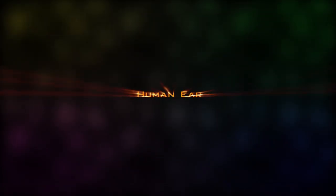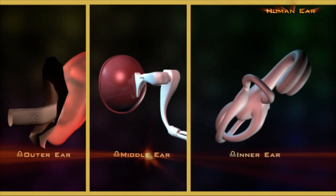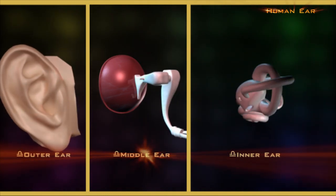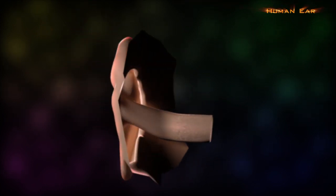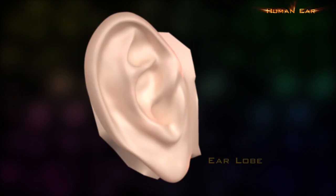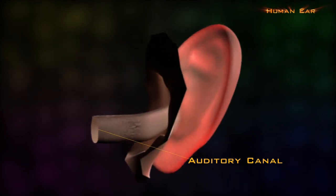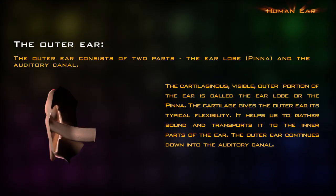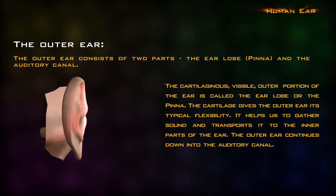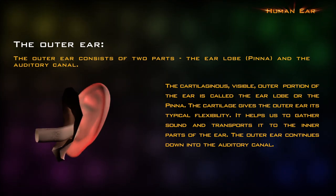To decode the whole complicated behavior, we have broken down the ear into three broad parts, namely the outer ear, the middle ear and the inner ear. The outer ear consists of two parts: the earlobe or pinna, and the auditory canal. The cartilaginous visible outer portion of the ear is called the earlobe or the pinna. The cartilage gives the outer ear its typical flexibility. It helps us to gather sound and transports the sound to the inner parts of the ear.